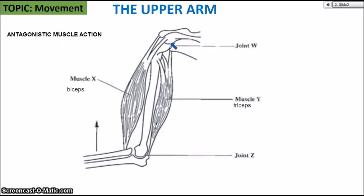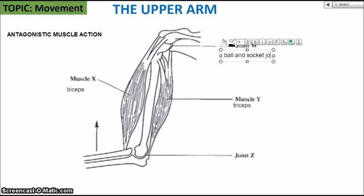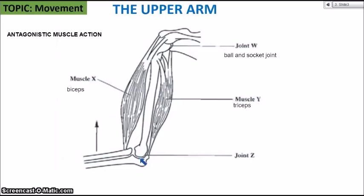Let's look at the two joints. Joint W is pointing at the ball and socket joint. This is the type of joint where the bone moves like a ball in a socket, giving full rotational movement — full 360 degrees. This is the shoulder joint, so you can actually swing your arm right around fully. The other joint is the hinge joint, which is the elbow joint shown there.